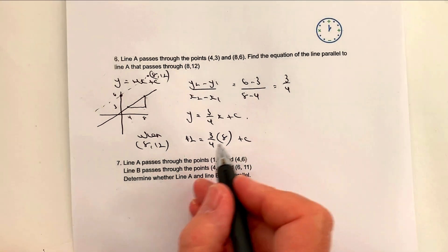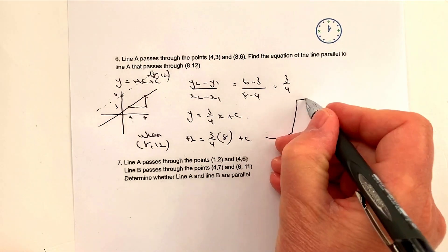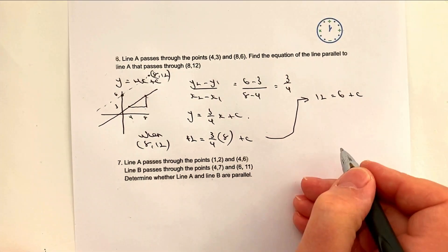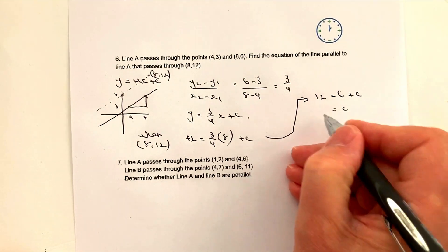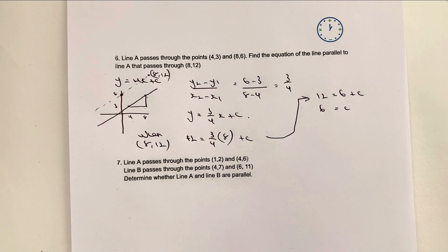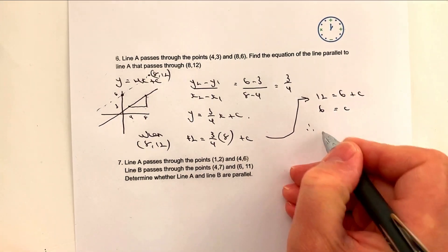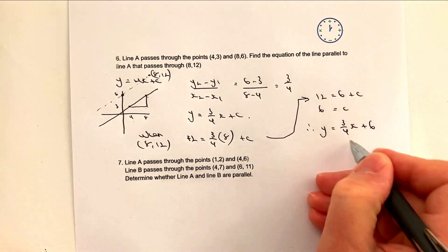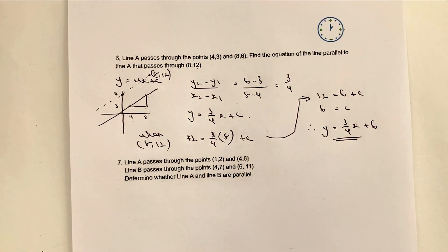Working that out: 12 = 6 + c, so take 6 from both sides — c = 6. Therefore the equation of the line passing through (8, 12) is y = ¾x + 6.